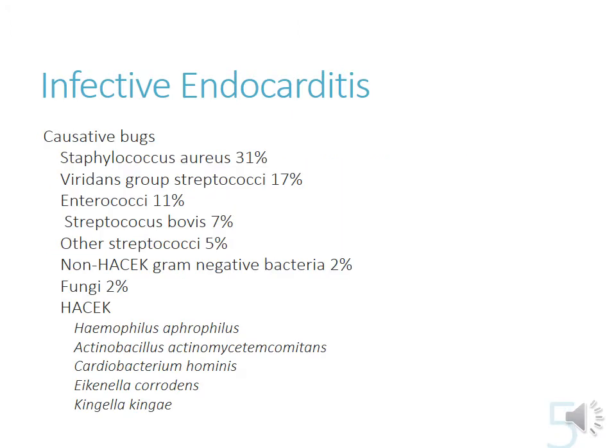The causative organisms we look to cover with antibiotics: Staph aureus represents about a third of cases. You have other gram-positives like streptococci and enterococci. There are also a small number caused by HACEK gram-negative bacteria. Fungi are also a possibility, particularly in immunocompromised patients — cancer patients, HIV, things like that.